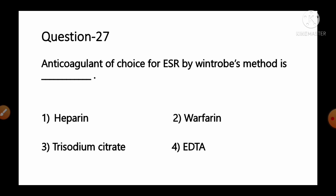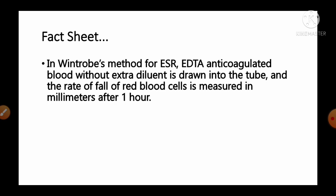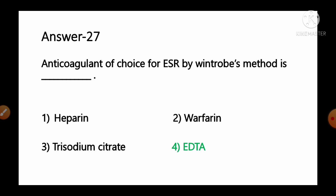Question number 27: Anticoagulant of choice for ESR by Wintrobe's method is — options: 1) heparin, 2) warfarin, 3) trisodium citrate, 4) EDTA. In Wintrobe's method for ESR, EDTA anticoagulated blood without extra diluent is drawn into the tube and the rate of fall of red blood cells is measured in millimeters per one hour. So option number 4, EDTA, is the correct answer.